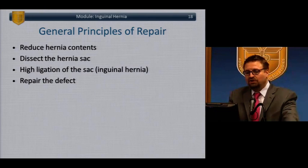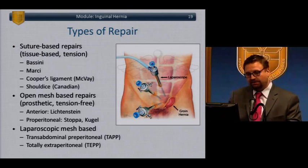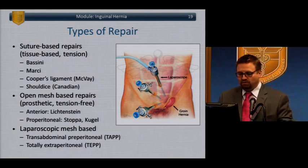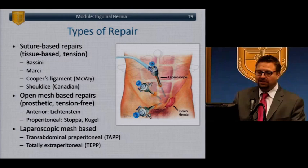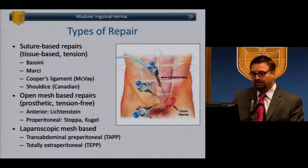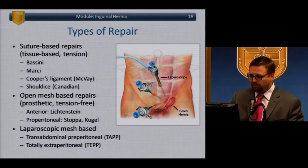General principles of hernia repair apply to all hernia types: reducing the contents, dissecting the hernia sac, ligating the sac, and repairing the defect. For inguinal hernia, there are many types of repair. Traditional suture-based repairs include the Bassini and others. Mesh-based repairs have mostly replaced suture repairs, but suture repairs still have a defined role — as in the contaminated case we discussed.